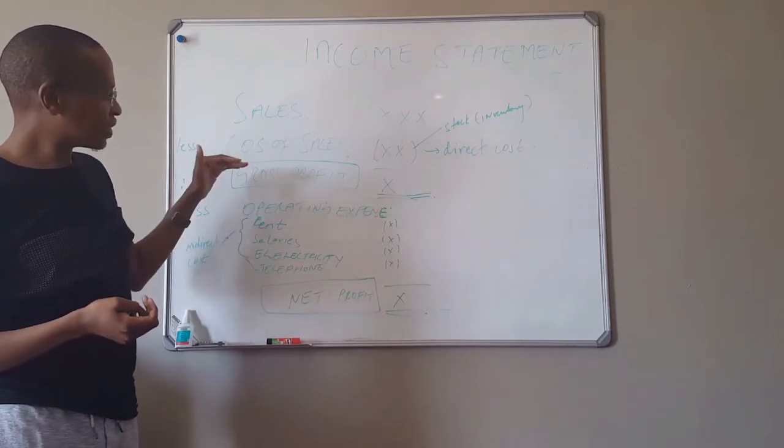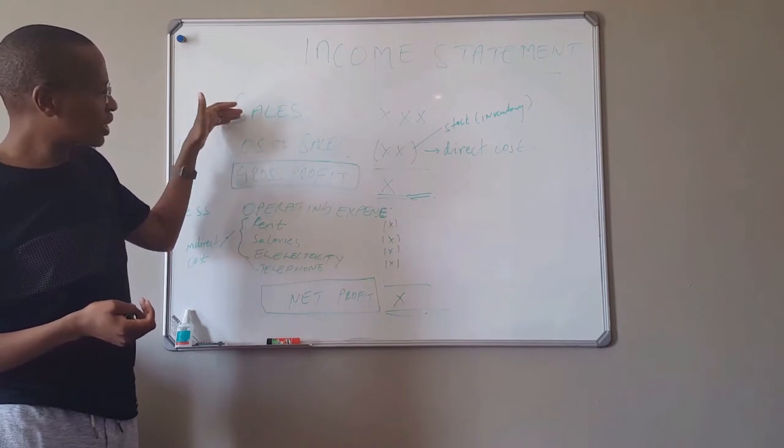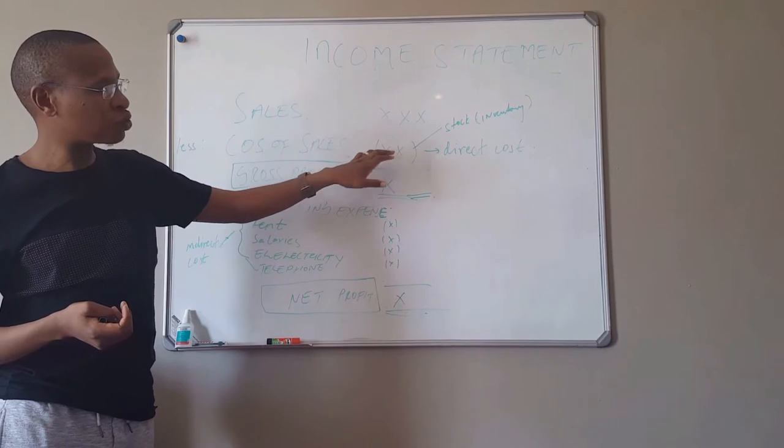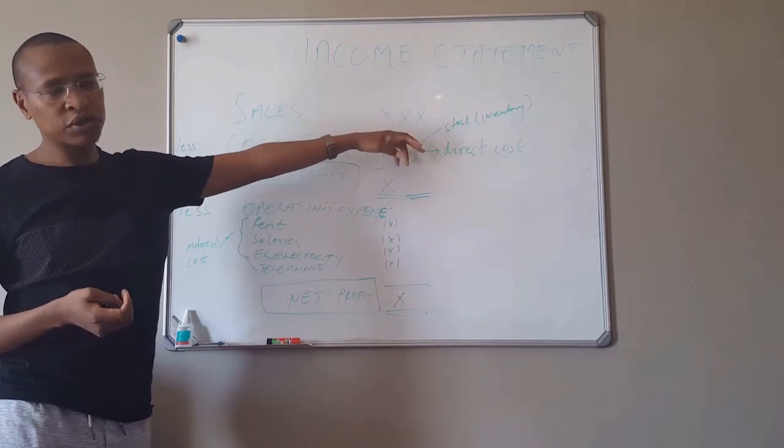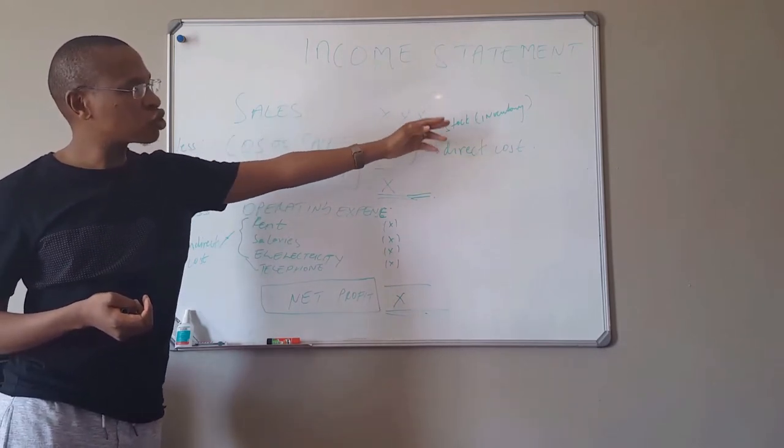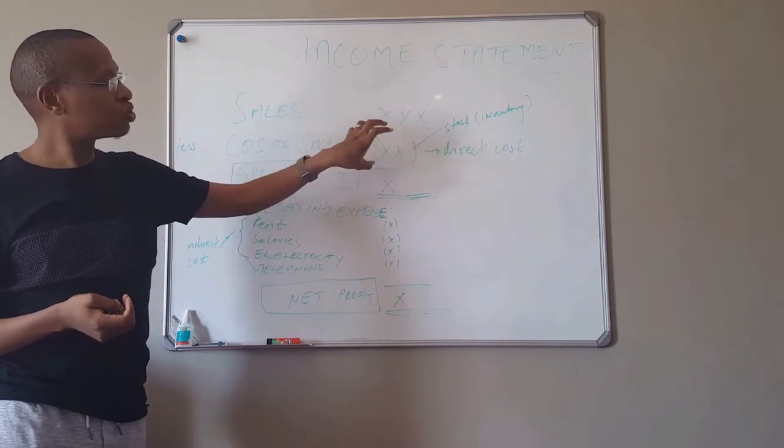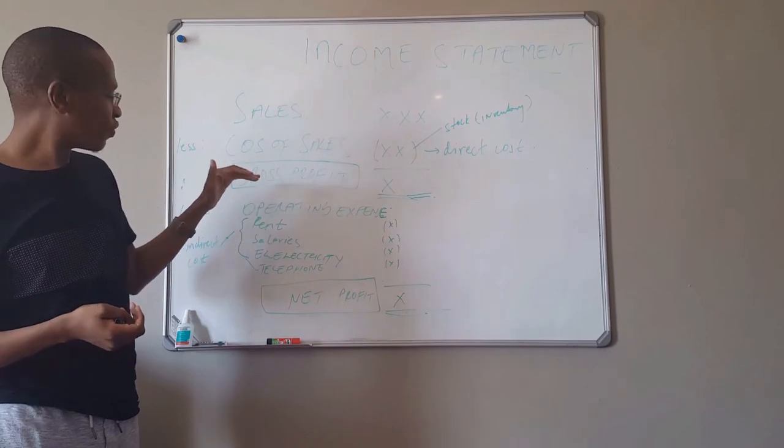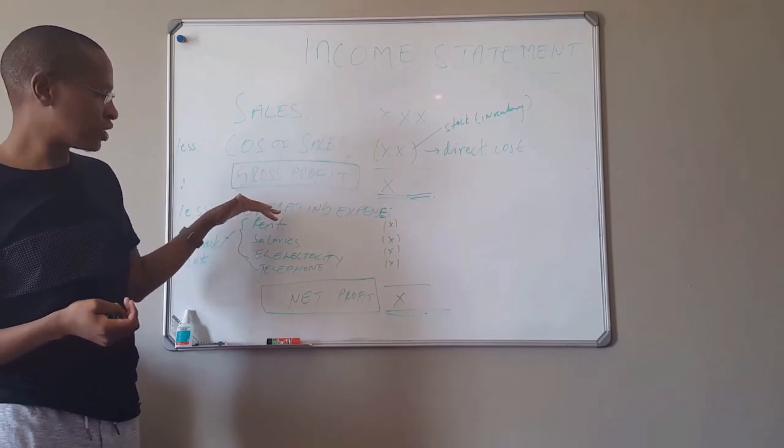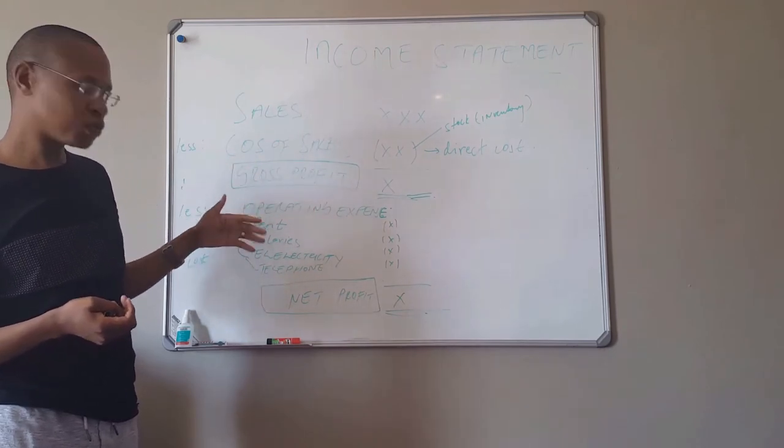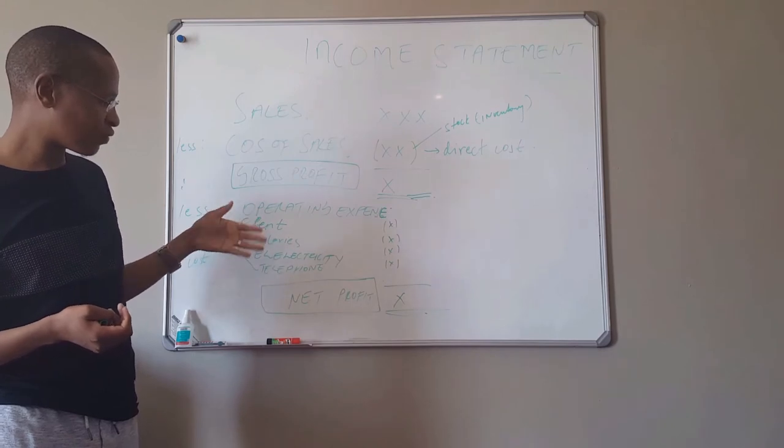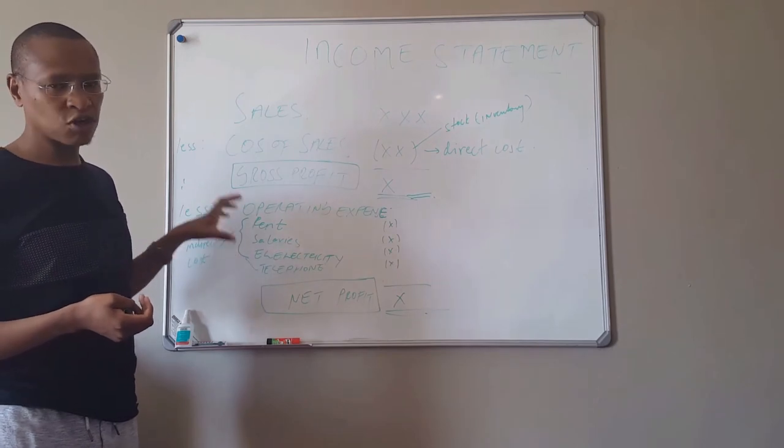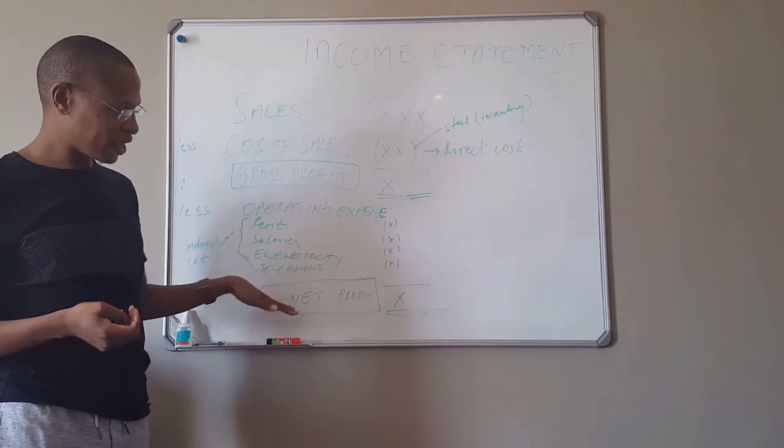The gross profit is sales minus your cost of sales. Cost of sales are basically direct costs which include stocks, transport to collect those stocks, and any costs that are related to that sales directly. Then you have your gross profit, then you deduct all the operating expenses which are your rent, salaries for employees, electricity, telephone, etc. - also called indirect costs or your overheads - then you will have your net profit.